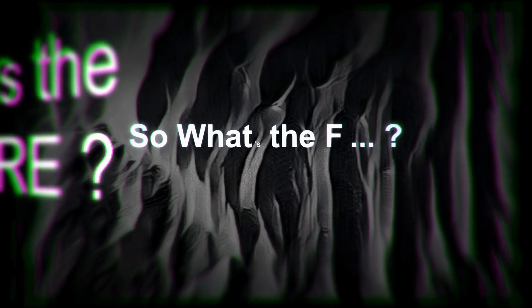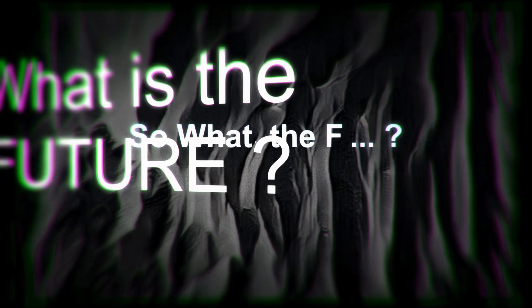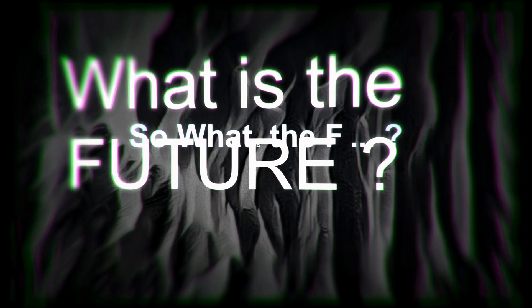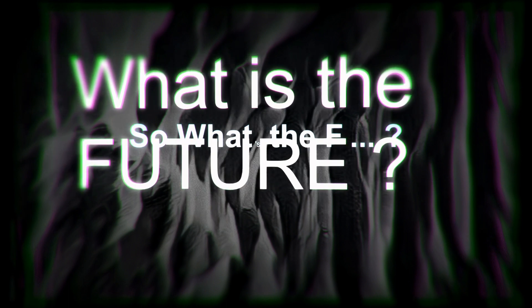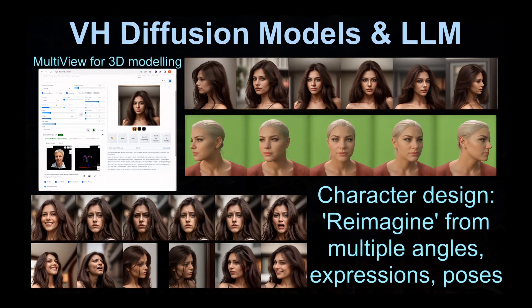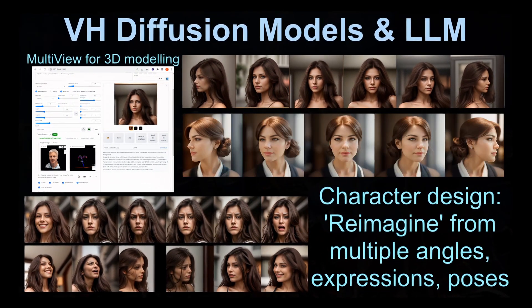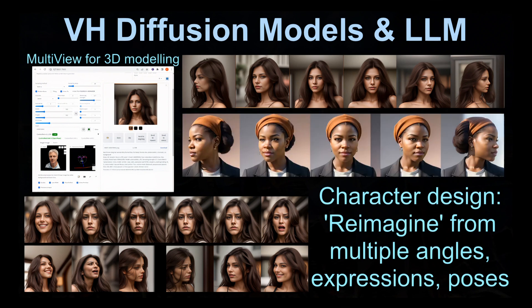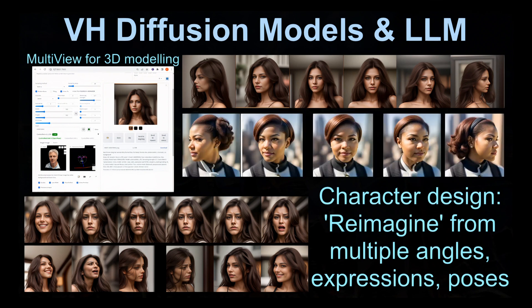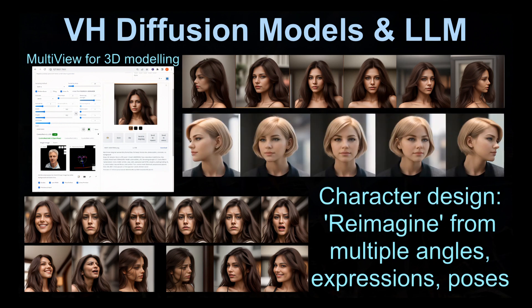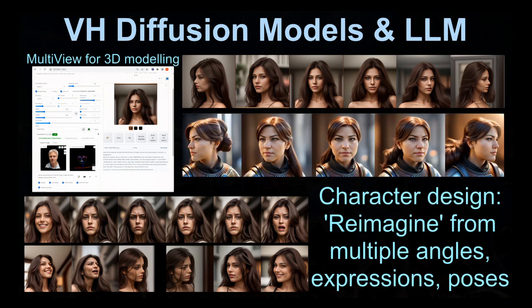When it comes to virtual humans, today both CGI and AI can clearly deliver, but generative AI has the advantage of being more cost effective. So what is the future? Diffusion models have the potential to become the one-stop solution for all. As an example, we may use them for character design to simply reimagine a person from multiple consistent angles, expressions, poses, hairstyles, or even outfits.